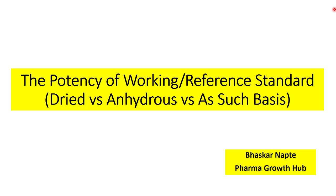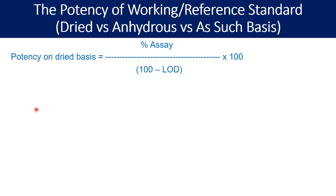We are trying to understand how one can calculate the potency for the standard on dried, anhydrous, or as-such basis. The calculation formula to define the potency of a standard on dried basis is: percent assay divided by (100 minus loss on drying), multiplied by 100%. The percent assay here is not corrected for water or loss on drying — it is just the percent assay obtained by HPLC analysis or potentiometric titration.